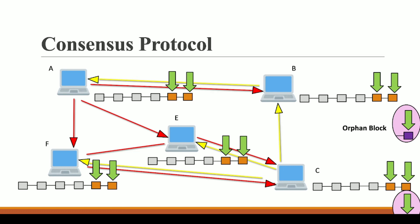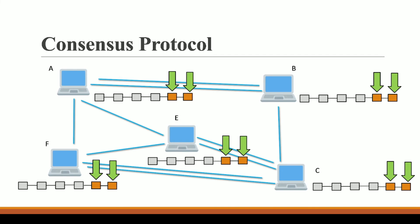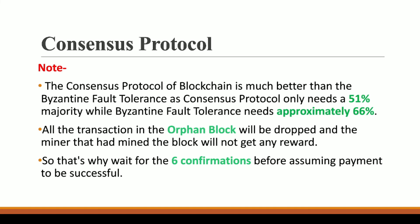The consensus protocol of blockchain is a much better alternative to Byzantine fault tolerance. As discussed in the Byzantine generals problem, the solution called Byzantine fault tolerance requires a majority of 66% votes. In contrast, our consensus protocol only requires a majority of 51%. So consensus protocol is a much better alternative because it requires a significantly lower majority threshold.